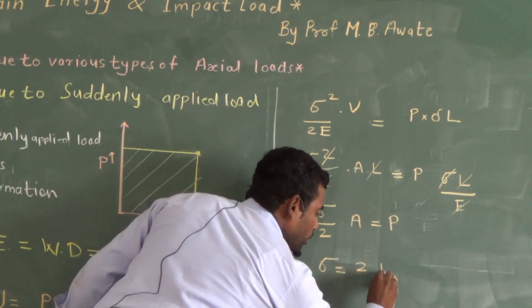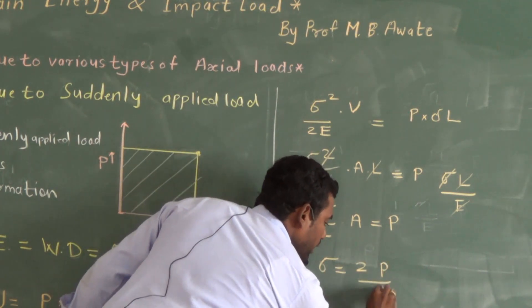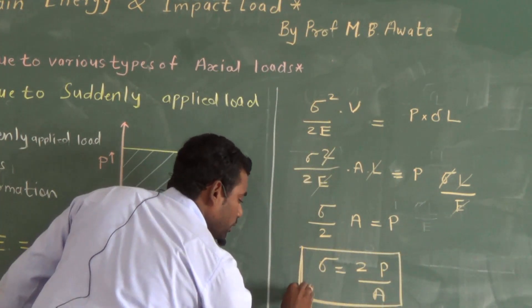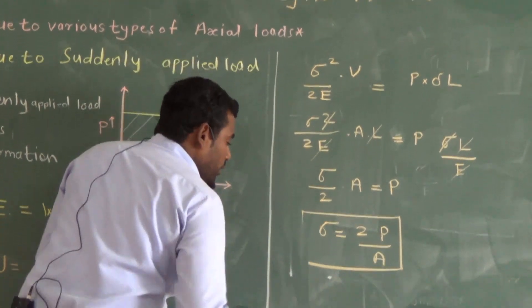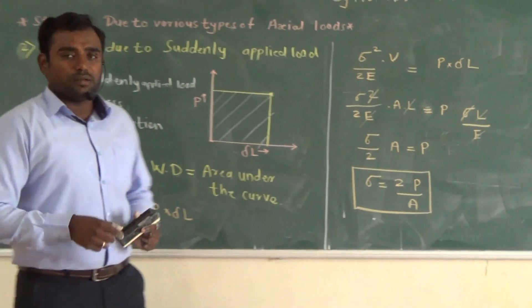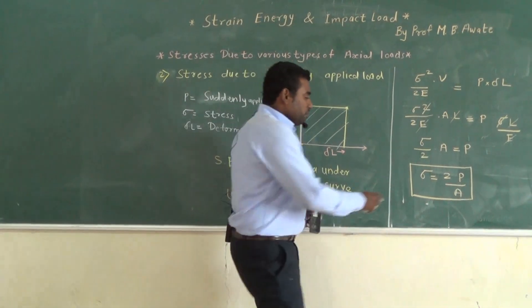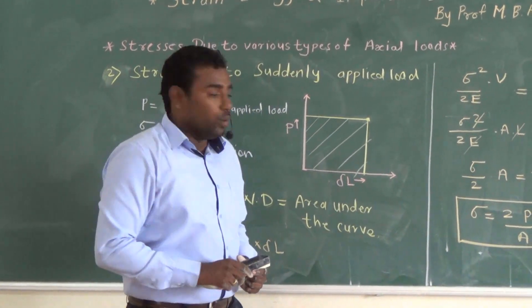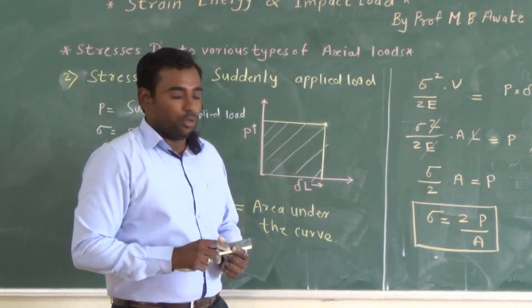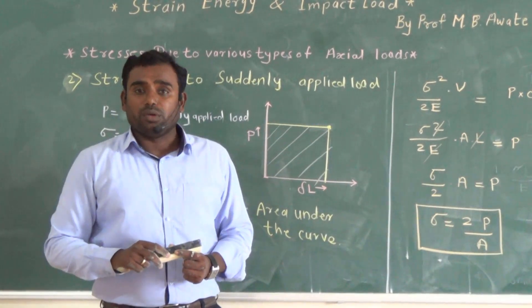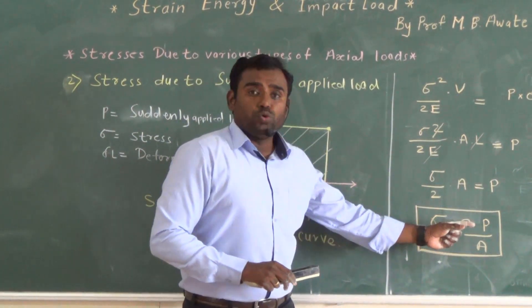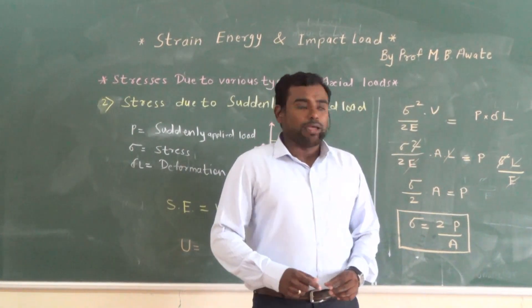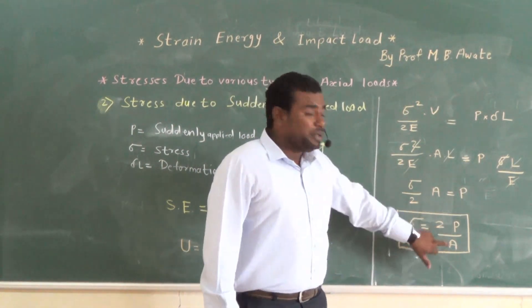Rearranging, sigma is equal to 2P divided by A. So, sigma — which is nothing but the stress in the body subjected to suddenly applied load — is equal to 2P divided by A, where P is the suddenly applied load and A is the cross-sectional area. Therefore, in the case of suddenly applied load, the formula for stress is: sigma equals 2P by A.